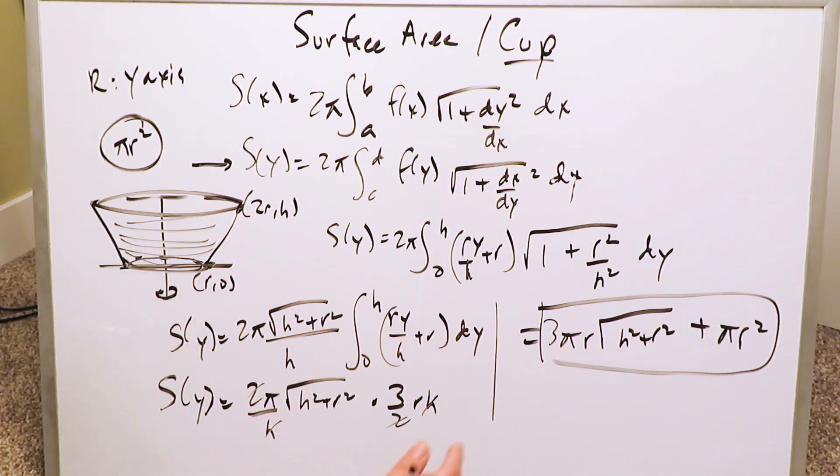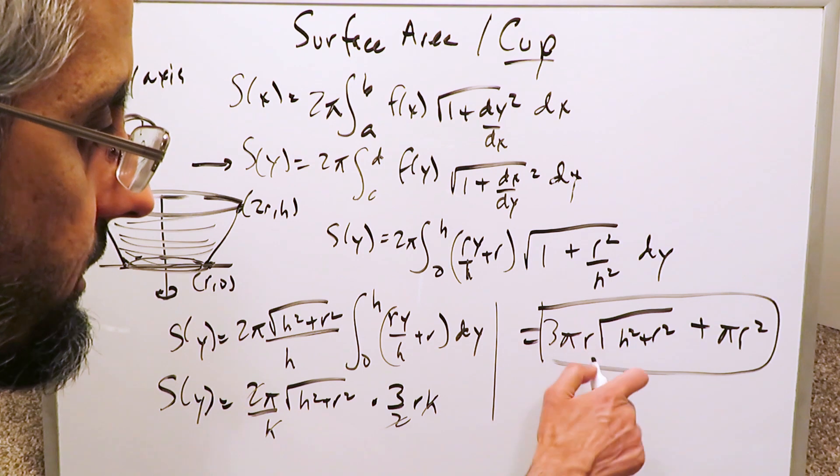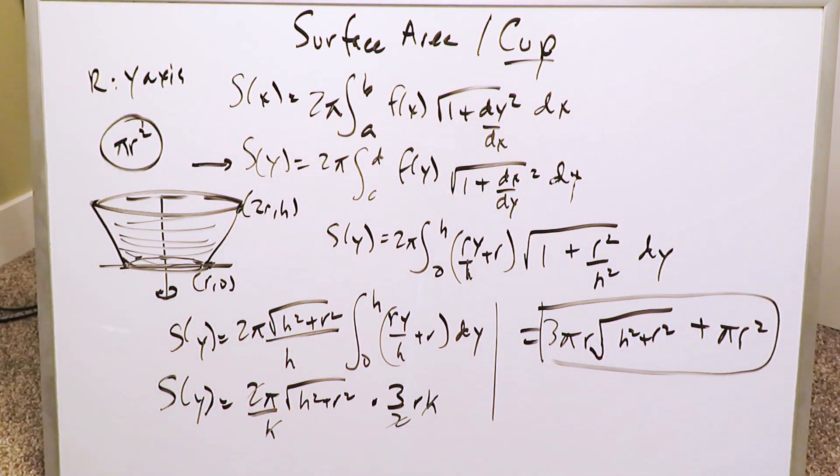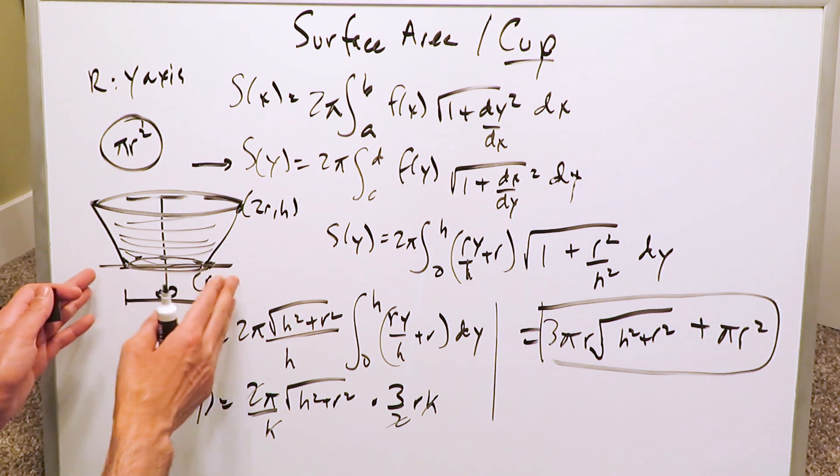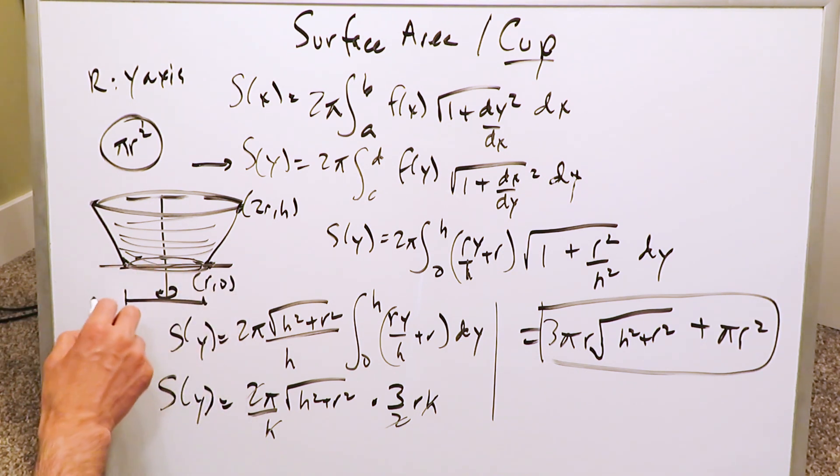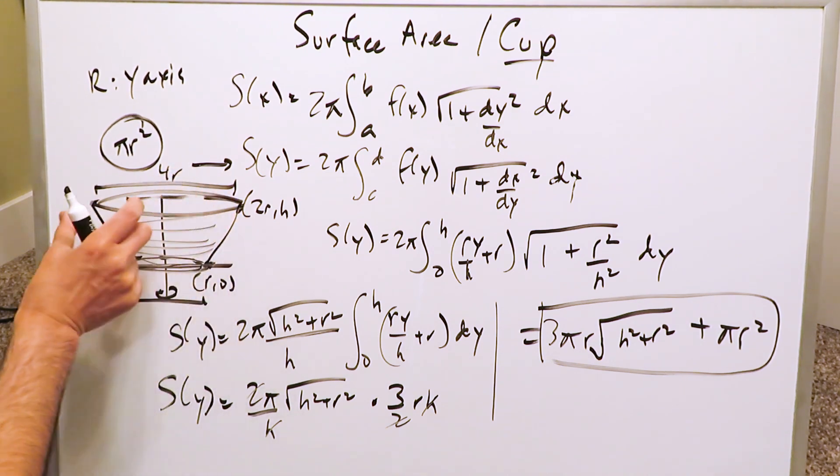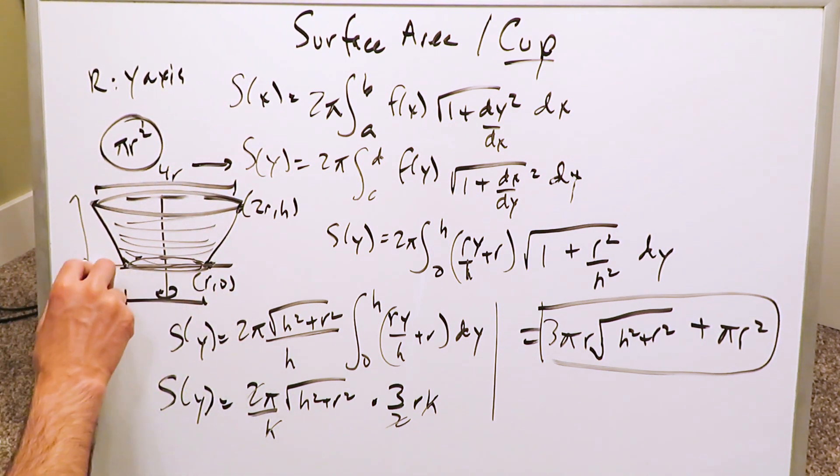So this in its entirety gives you the surface area of a cup or a bowl-like structure accounting for the lateral and the bottom. And that right there shows you it all: 3πr√(h² + r²) plus πr². You have a total width here of the base to be 2r, here on the top to be 4r, and the height to be h.